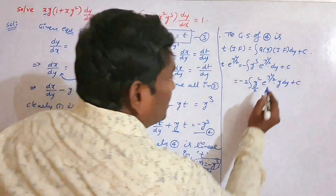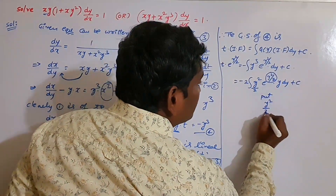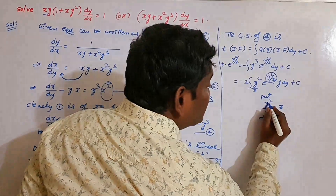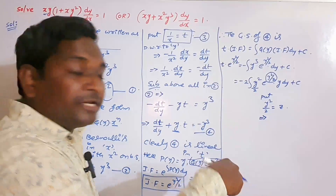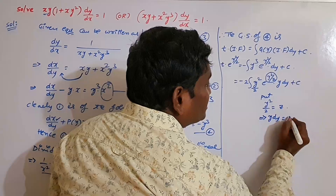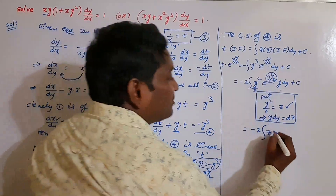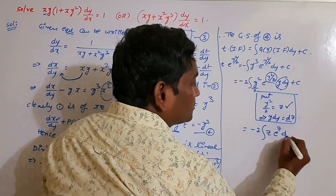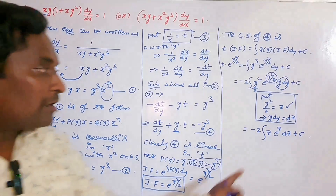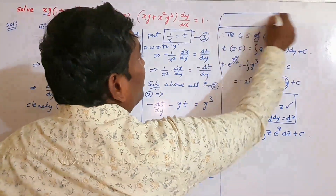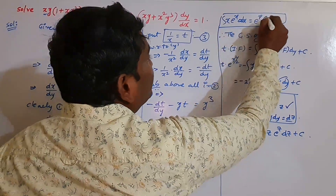We use the substitution: let z equal y squared by 2. Then dz equals y dy. So y cubed times e to the power y squared by 2 becomes y squared times e to the power z times y dy, which becomes z times e to the power z times dz. Using the standard formula — integral of x e to the power x equals e to the power x times (x minus 1) — we get minus 2 into e to the power z times (z minus 1), plus c.